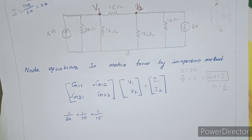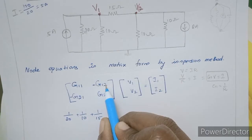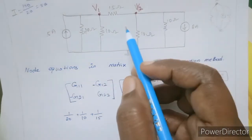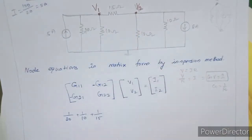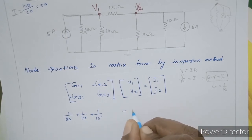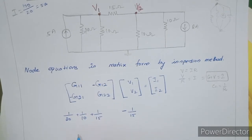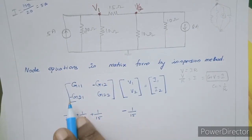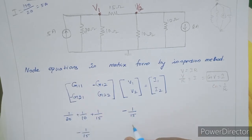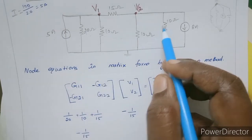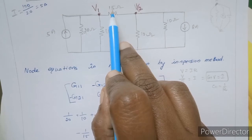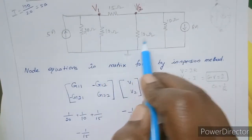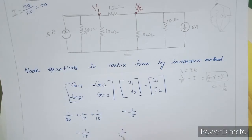G21 is the same as G12 by symmetry: minus 1/15. G22 is the sum of all conductances connected to node 2. The resistances at node 2 are 15 ohm, 10 ohm, and 10 ohm, so G22 equals 1/15 plus 1/10 plus 1/10.